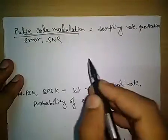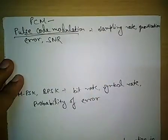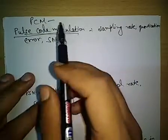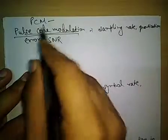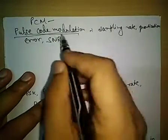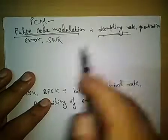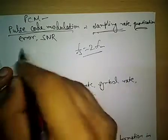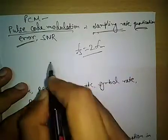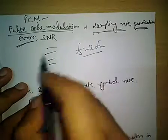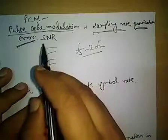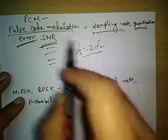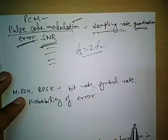The next topic is Pulse Code Modulation (PCM). Questions from this topic have been asked frequently and alternately in the exam, so we must prepare it. Key sub-topics include the sampling rate — FS must be equal to or greater than 2FM (Nyquist rate) — quantization error (the error introduced when quantizing a signal into different levels), and SNR (signal-to-noise ratio), which is very frequently asked for PCM.